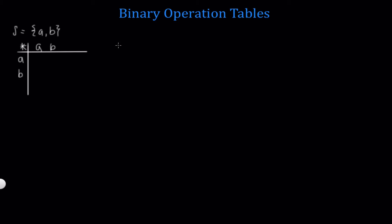For each ordered pair in the set S cross S, we need to make sure first that it gets mapped into exactly one element, and second that that element is again in the set S. So let's look at the ordered pair A star A, and we want to compute this using our binary operation — we want to see what element this gets mapped to. This is just the same as writing A star A. In order to be a binary operation, we can either map this into A or into B, so we have two options here.